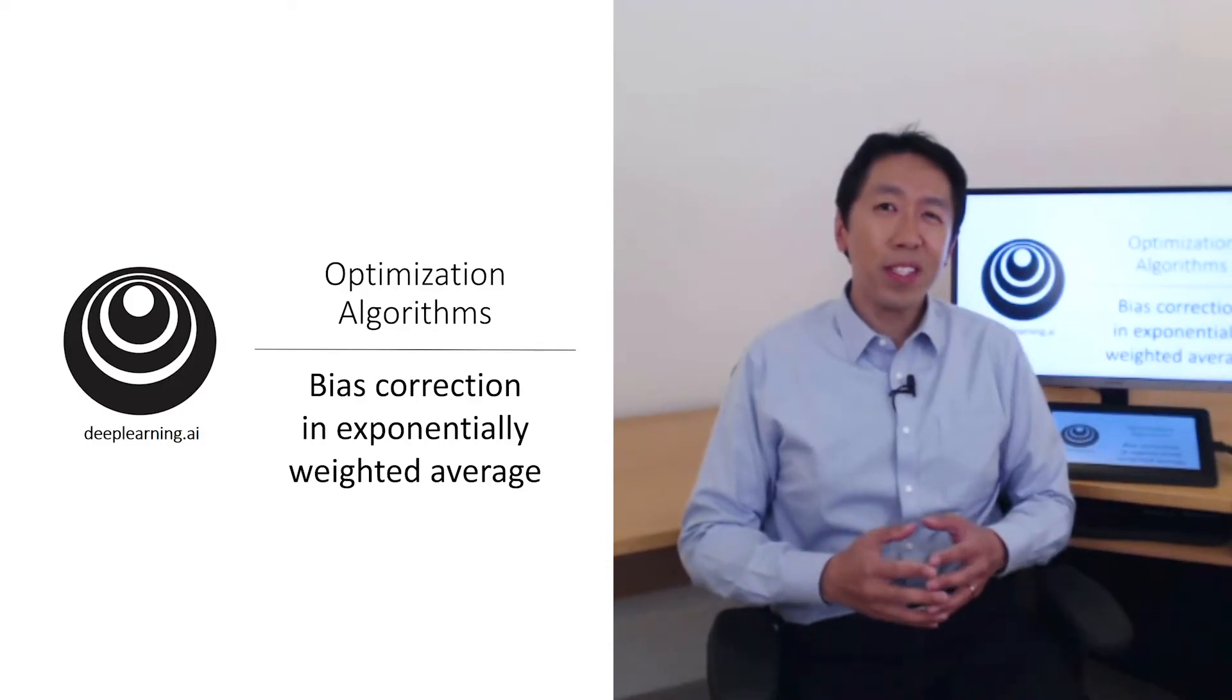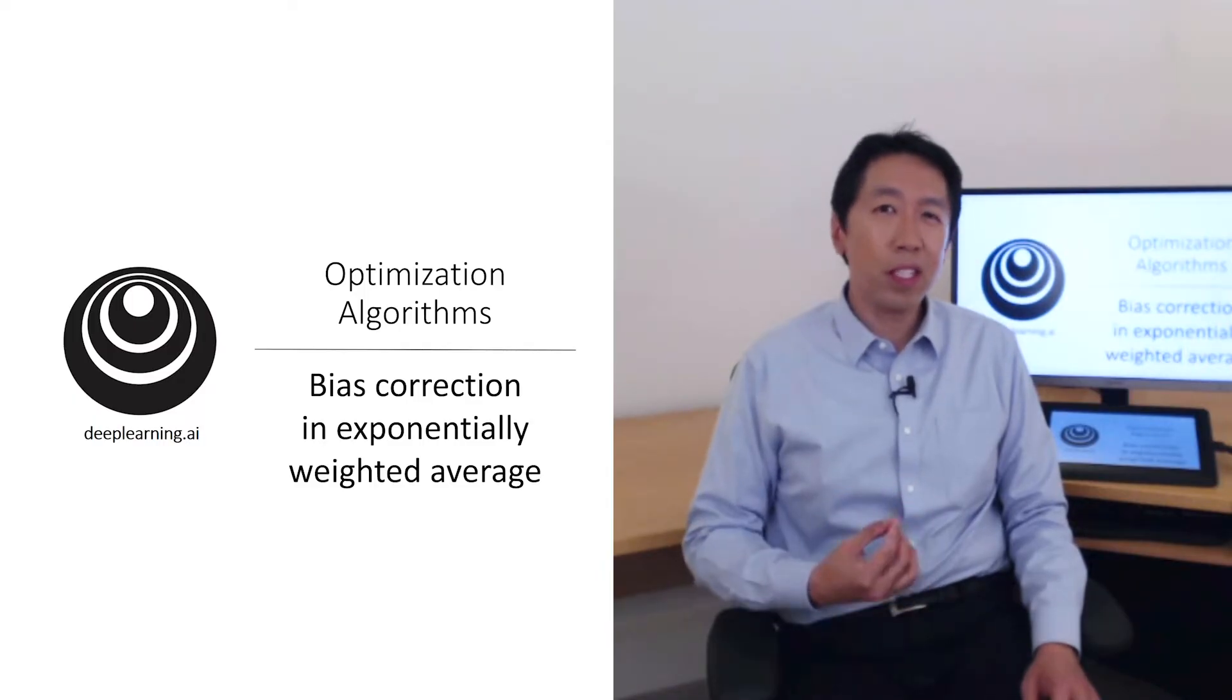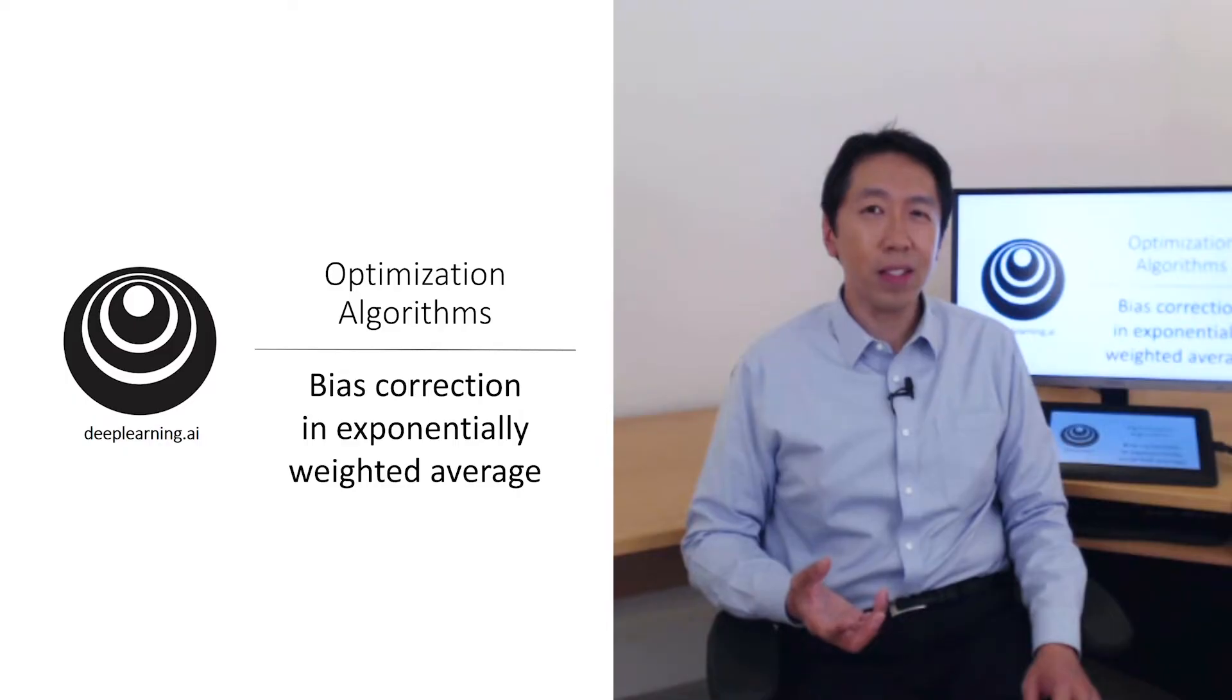You've learned how to implement exponentially weighted averages. There's one technical detail called bias correction that can make your computation of these averages more accurately. Let's see how that works.